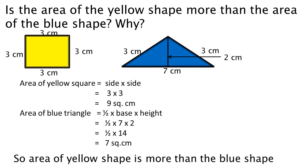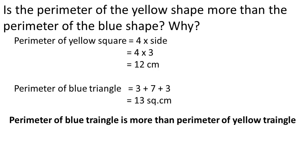Area of yellow square is nine square centimeter, so area of yellow shape is more than the blue shape. Now the question is: is the perimeter of yellow shape more than the perimeter of blue shape, and why?